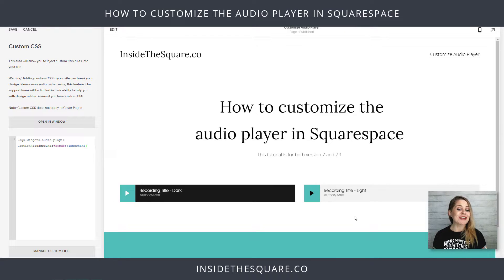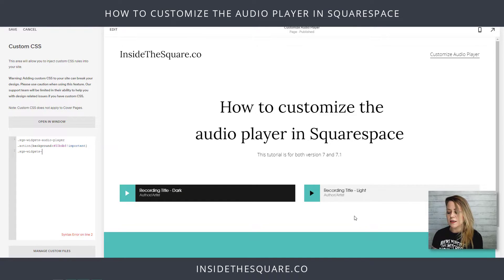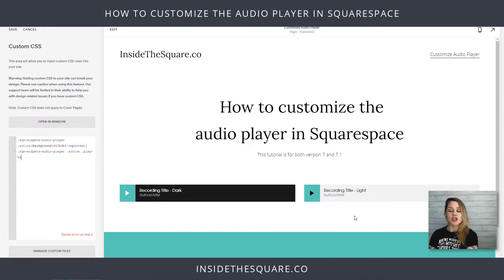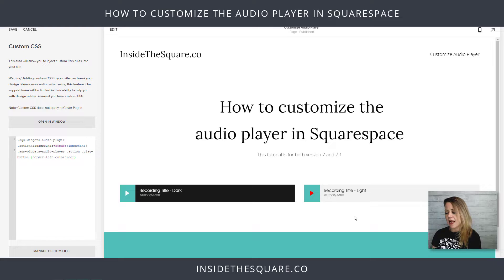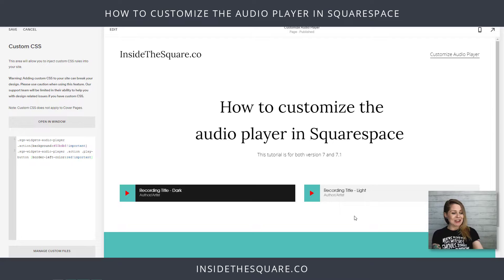Now let's say you want to change the color of the actual play button on top of that. To call out that code, we're going to say: SQS widgets audio player dot action dot play-button. The play button is very interesting — it's actually a left border. So what we need to say is "border-left-color" and we can say "red" for example, and add "!important" to make sure that code's prioritized. Check it out — the play button is now red.